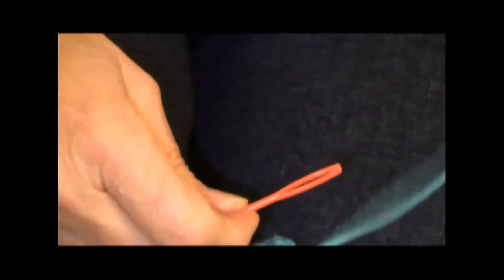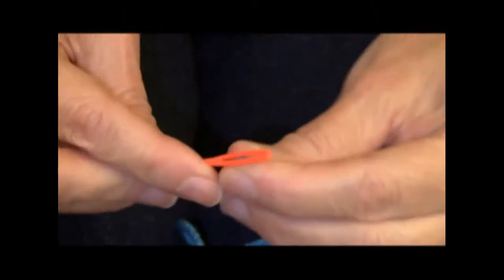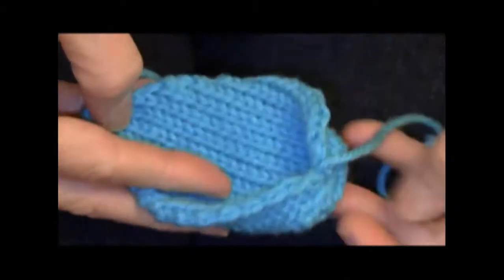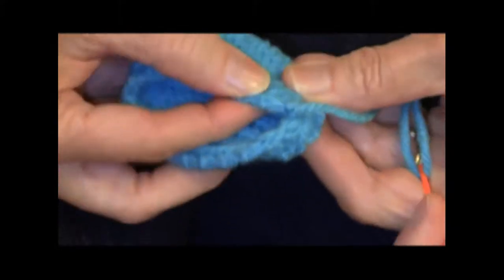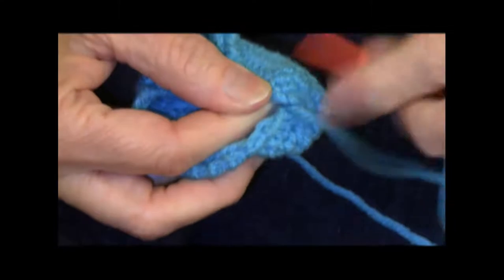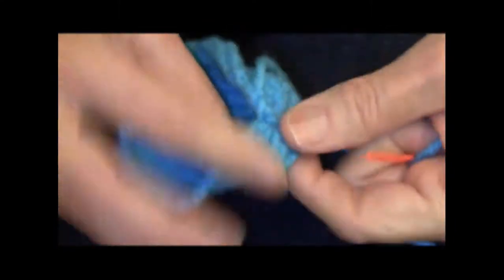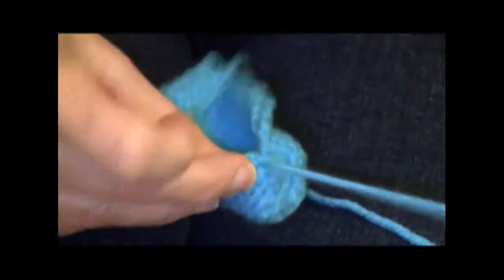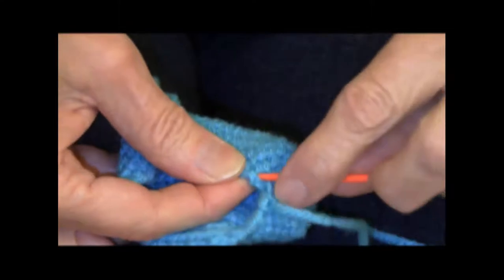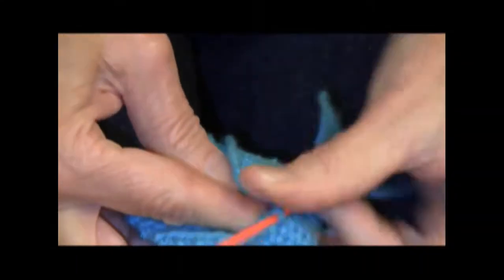I'm going to thread the yarn into a big plastic tapestry needle and unfold it. And what I do is I pick up a horizontal bar, a stitch in from the edge for the mattress stitch, go to the opposite side, pick up the bar, a stitch in from the edge on that side, back to this side, next bar, back to this side, next bar.